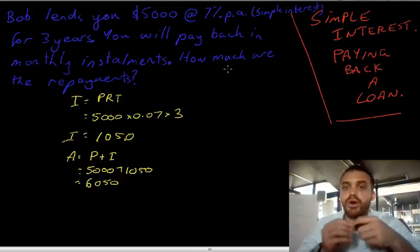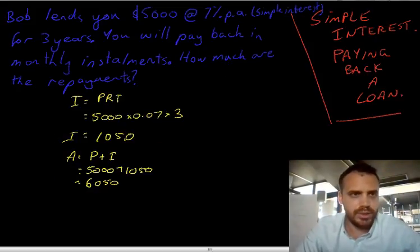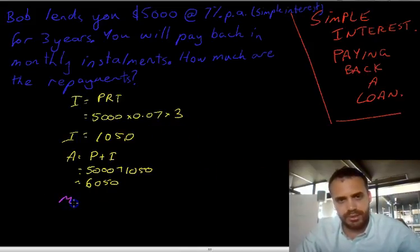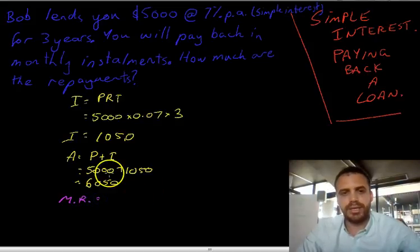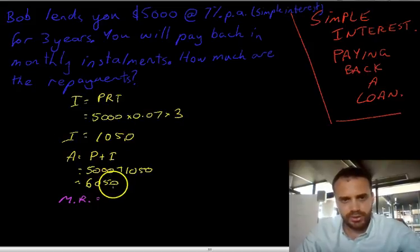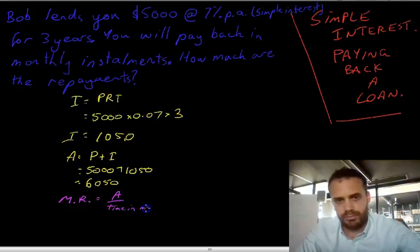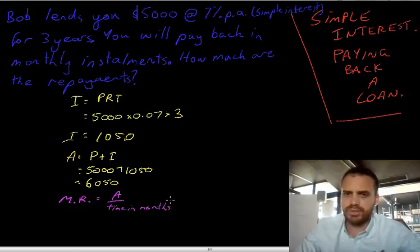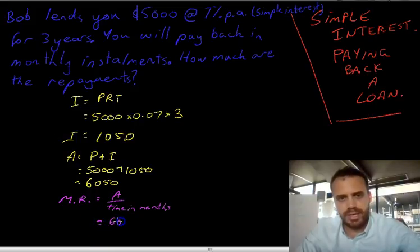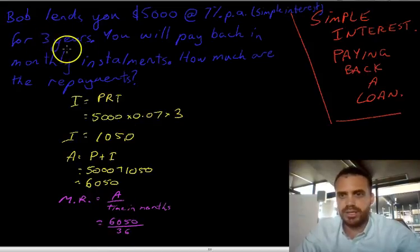So you actually have to pay Bob back $6,050 over three years. The monthly repayment — let's call it MR — is equal to the total amount A divided by the time in months. Why months? Because they're monthly installments; you're paying him back every month. So that's $6,050 divided by 36 months, because it's three years: three times 12 equals 36.